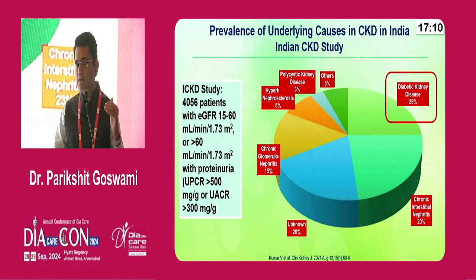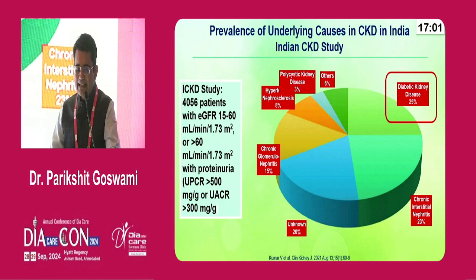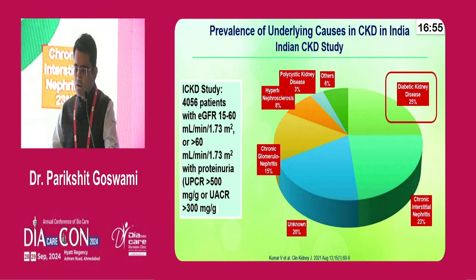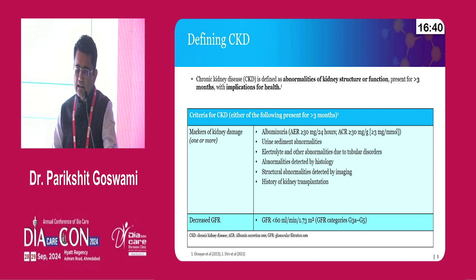Look at the prevalence of chronic kidney disease in India. This is a wonderful study by Dr. Kumar — the Indian Chronic Kidney Disease Study, which enrolled 4,056 patients. Strikingly, one-fourth of the patients had diabetic kidney disease, 23% had chronic interstitial nephritis, 20% were unknown — where investigations will really help out.